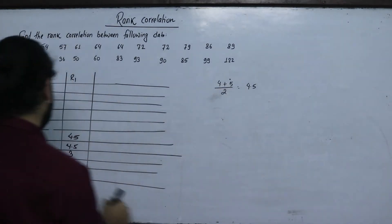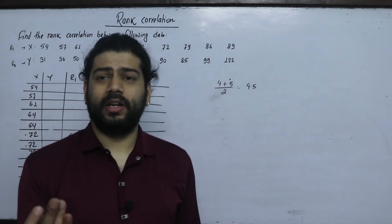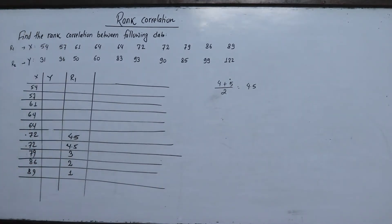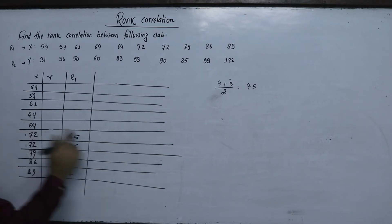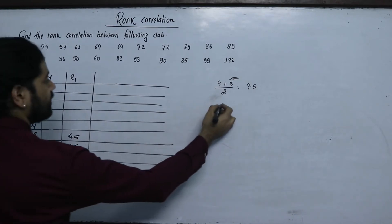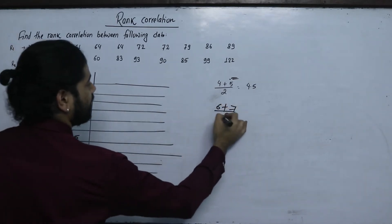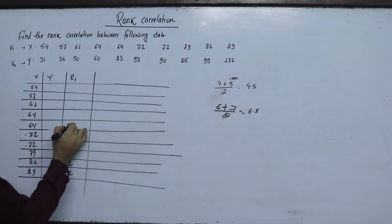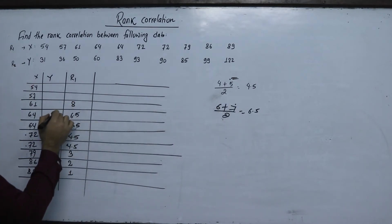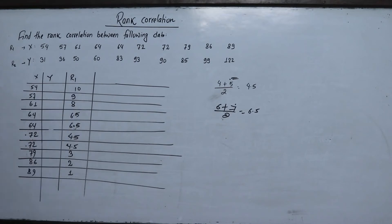So 72 gets rank 5. For 64, which is repeated twice, the positions are 6th and 7th, so (6+7)/2 = 6.5. Both repeated 64 values get rank 6.5. After ranking all X values, we proceed to rank Y.